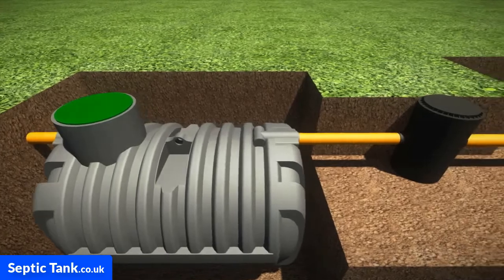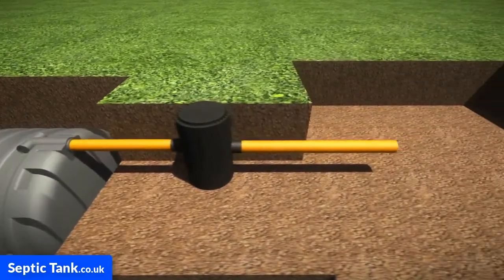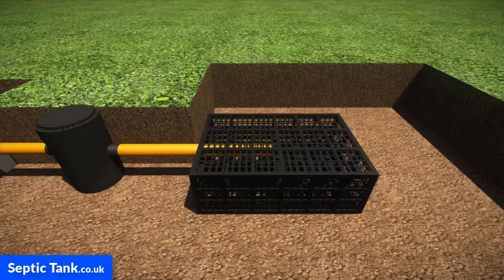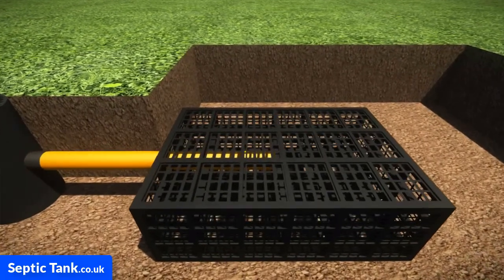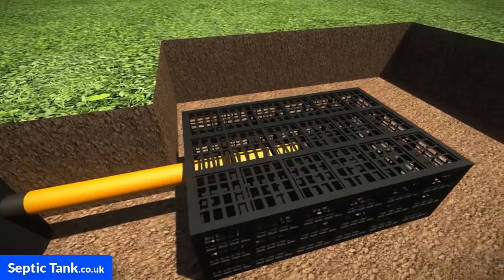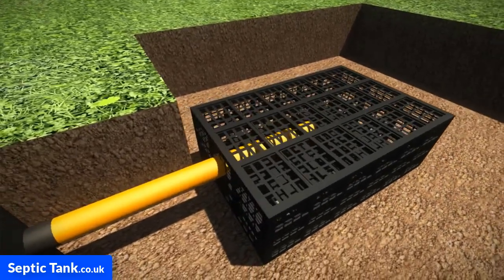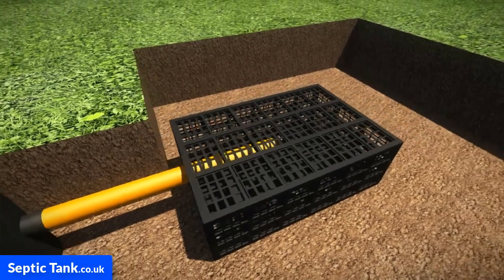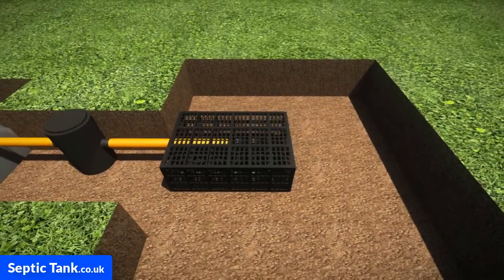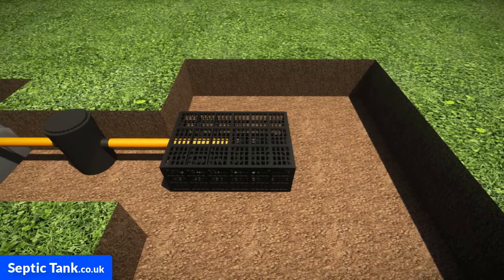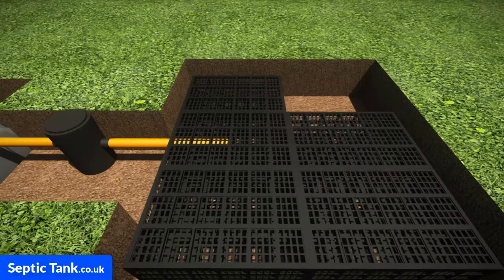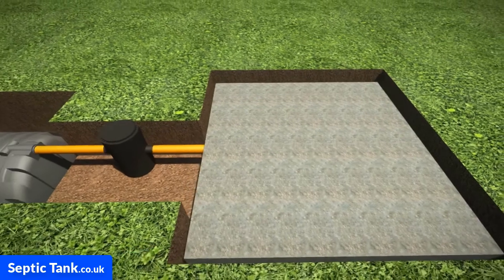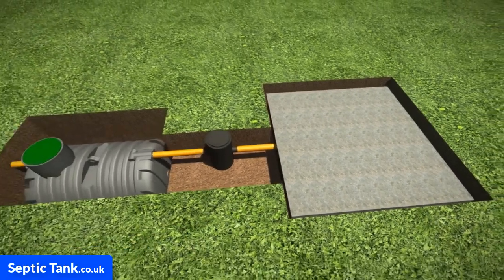Soakaway crates connect to the outlet pipe of septic tanks and they're designed to help the wastewater soak away into the soil. Septic tank soakaway crates are made from very strong plastic. They're hollow and they're normally rectangular and they have a 20 ton bearing load. They're really easy to install as well. Literally dig your hole and then place and insert the soakaway crates into the hole. They just push together and clip together with clips. Once you've done that, cover them with membrane. And that's basically what septic tank soakaway crates are.